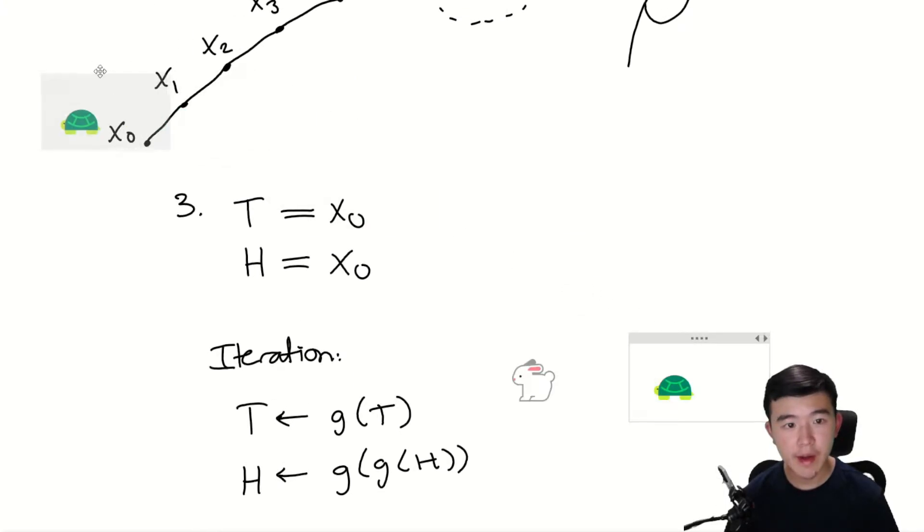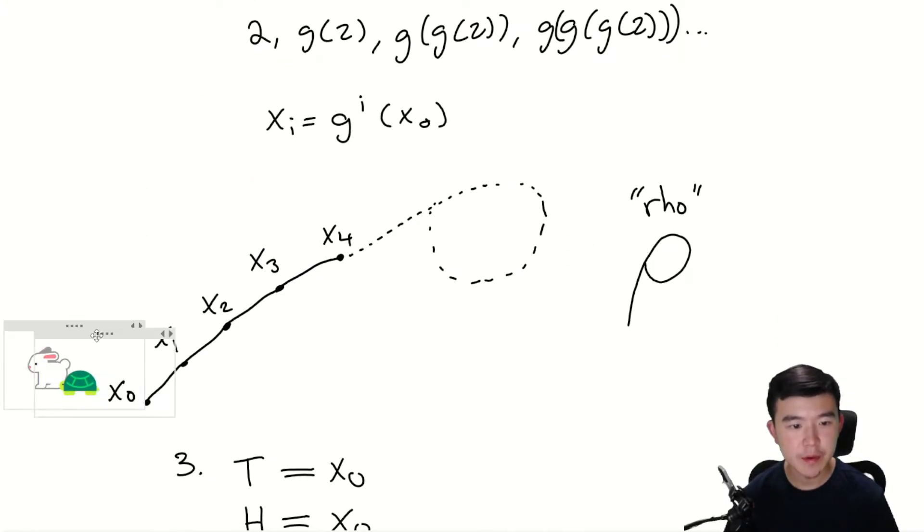After the first iteration, the tortoise has moved to x₁, while the hare has moved to x₂. After the next iteration, the tortoise has moved to x₂, while the hare has moved to x₄. After the next one, the tortoise will be at x₃, while the hare is at x₆, and so on and so forth.